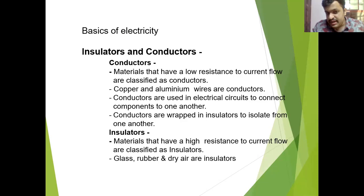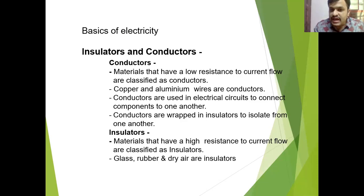These materials have low resistance to current flow. I told about resistance in the last class — resistance means opposition. If a material has low resistance, that means it will not oppose the current flow, and that is known as a conductor. In these conductors, current will pass.